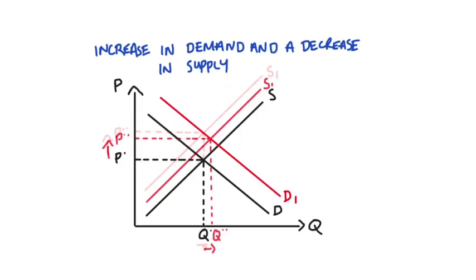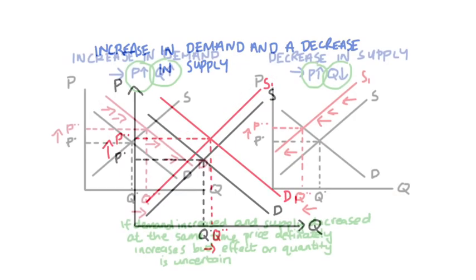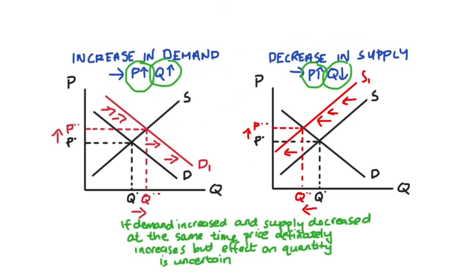And actually this is the reason why the best strategy I think is to draw each effect out separately and look at each effect on its own. The variable going in the same direction, so in this case price, that's going to be our for certain effect. That effect is definitely going to happen. The variable that is moving in opposite directions, in this case it was quantity, well that effect is going to be uncertain or indeterminate.